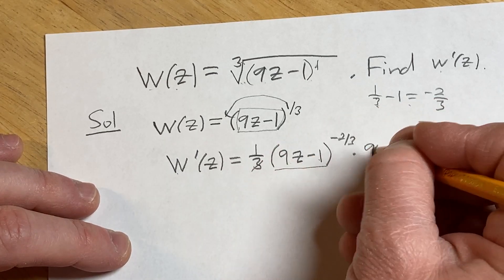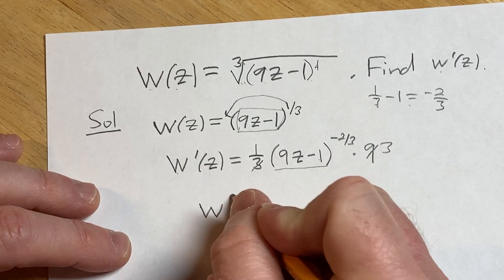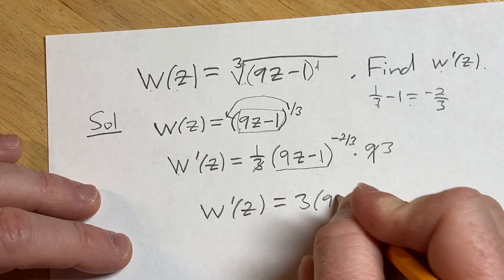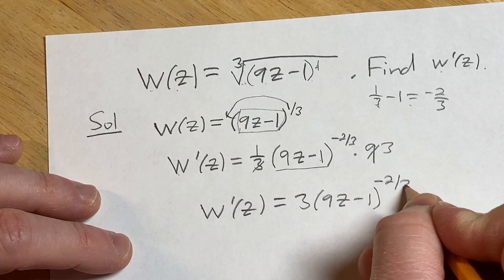Because 3 goes into 9 three times, w'(z) = 3(9z - 1)^(-2/3).